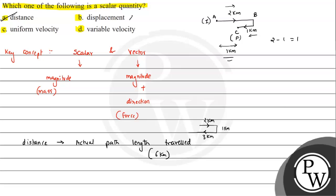Velocity is the rate of change of displacement with respect to time. Since velocity is defined using displacement, which is a vector quantity, velocity is also a vector quantity. Therefore, option A — distance — is the correct answer. I hope you understood the solution. All the best.